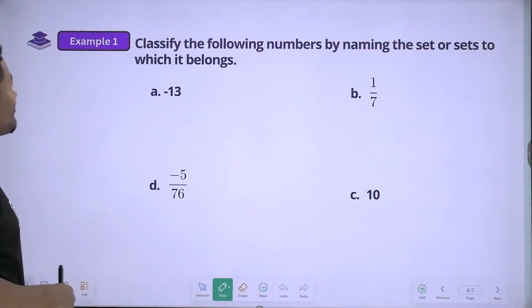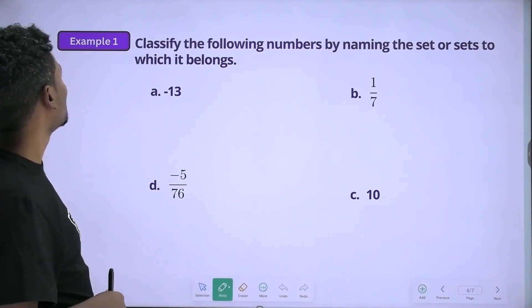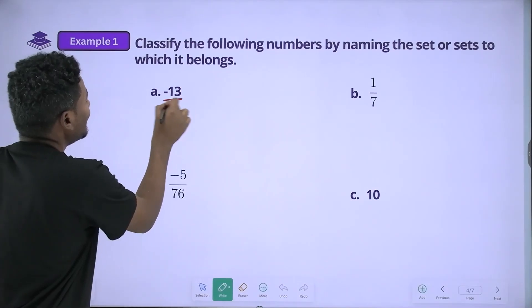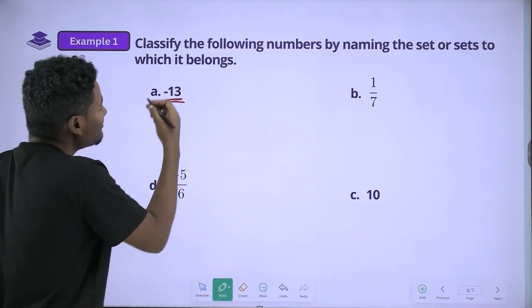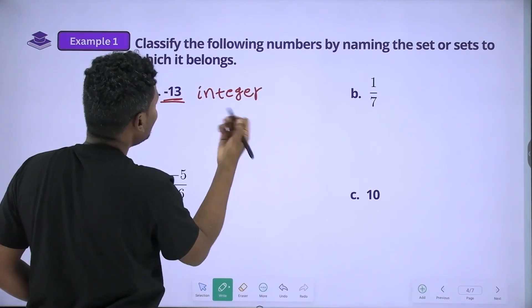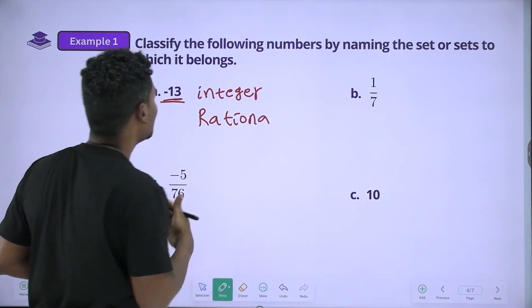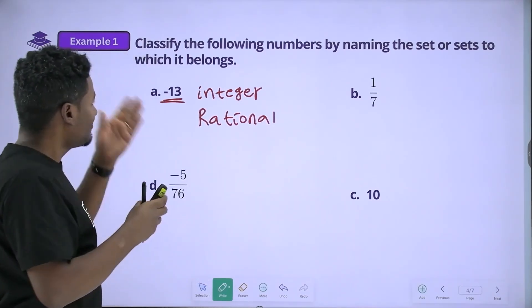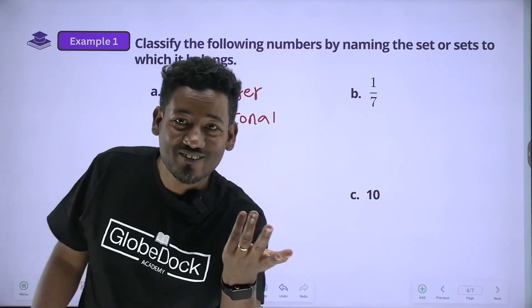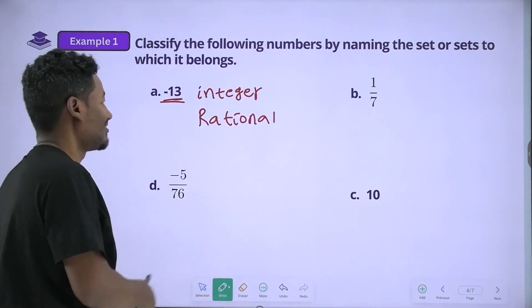Let's see. Classify the following numbers by naming the set or sets to which it belongs. This is negative — negative is an Integer and Rational. Natural, Whole, Rational.